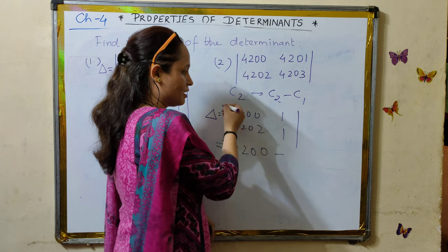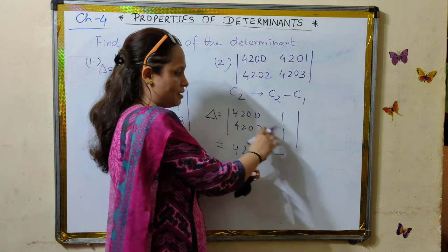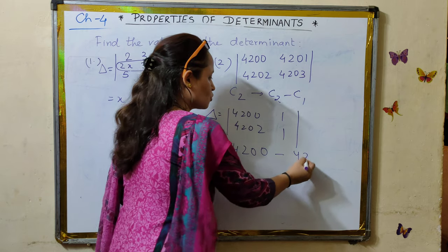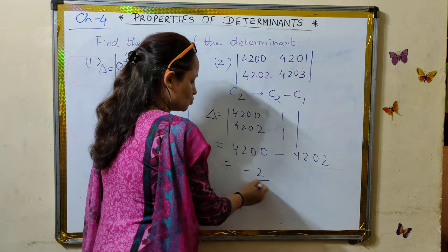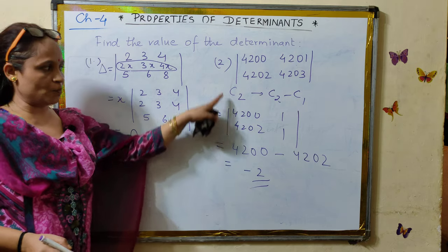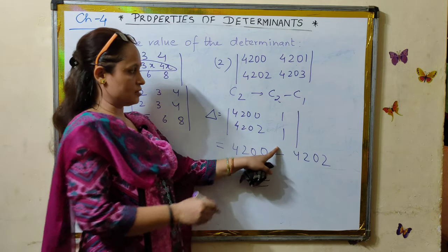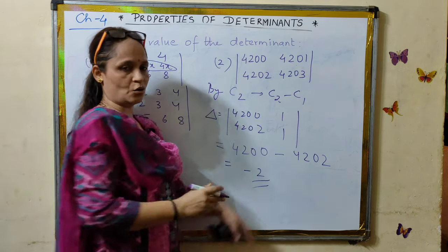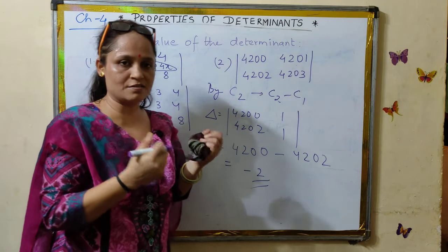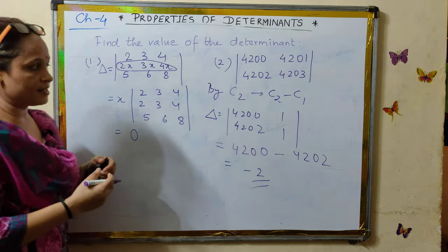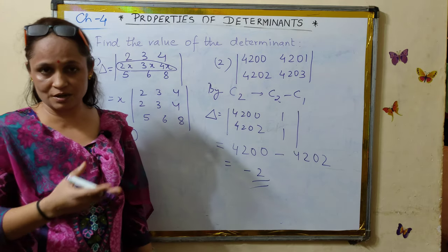By expanding, the result is a product of the diagonal minus product of the diagonal. So we get the result as minus 2. The usage of properties has simplified the entries of the determinant. We are learning how the use of properties simplifies the entries, and hence the procedure and process of evaluation becomes simpler.